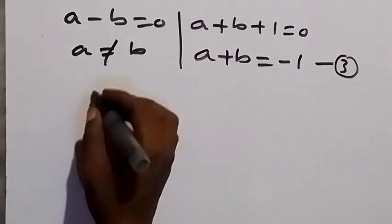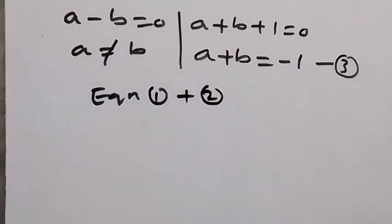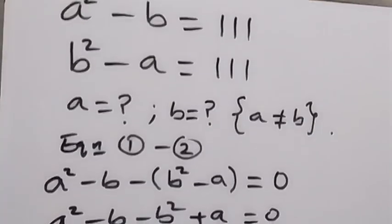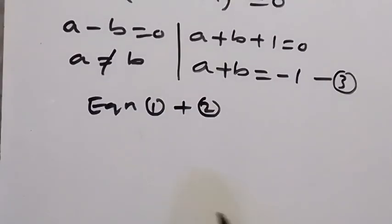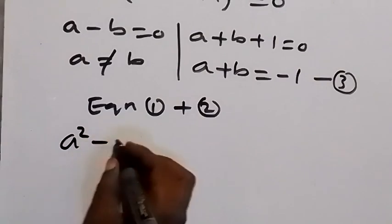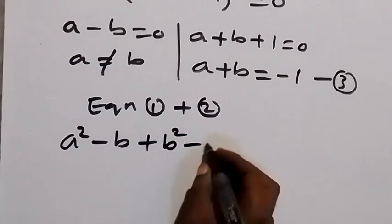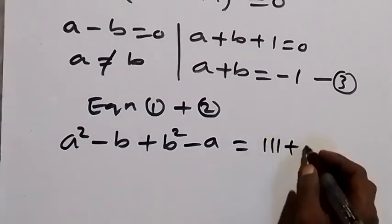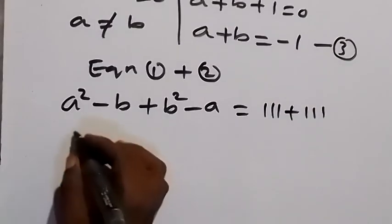In the next step, we add equations 1 and 2. On the left-hand side we have (a² minus b) plus (b² minus a), and on the right-hand side we have 1 plus 1. Bringing the square terms together we get a² plus b², and we bring the linear terms together giving minus a minus b.